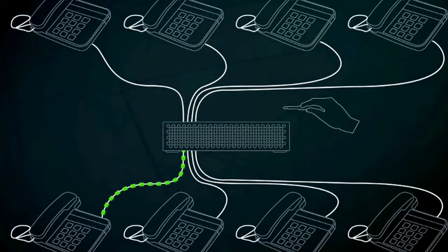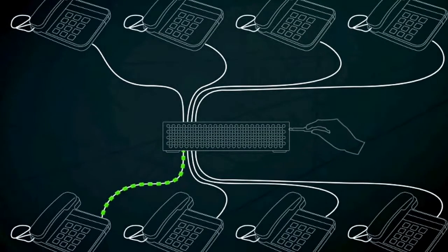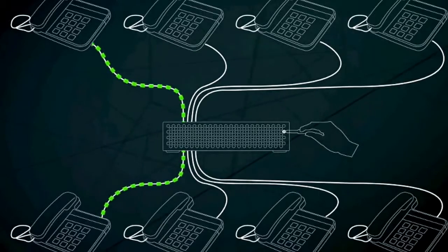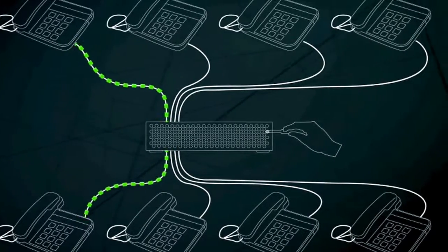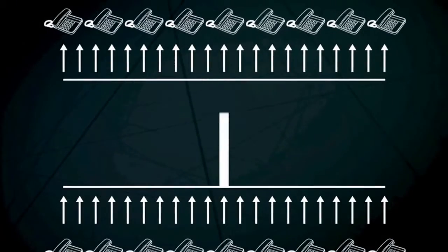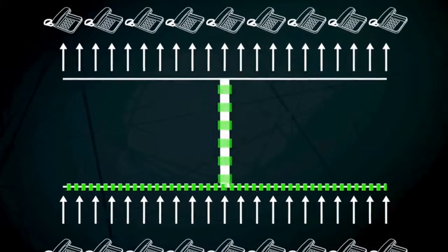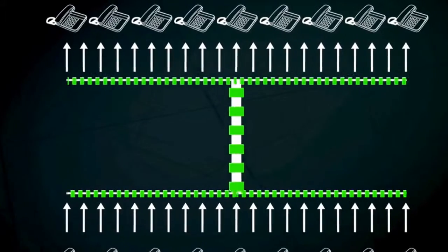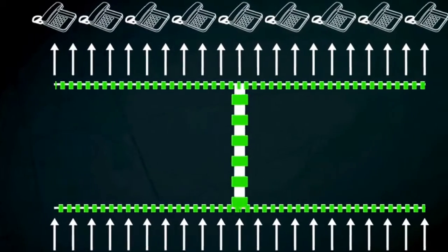Originally, each phone call went to a central exchange, where an operator manually connected you to the right number. This is now done with an electronic switch. A process called multiplexing allows thousands of conversations to be transmitted at the same time along one cable.